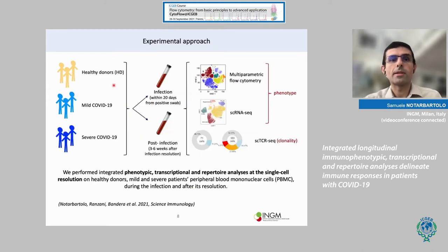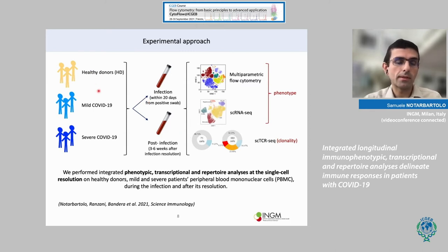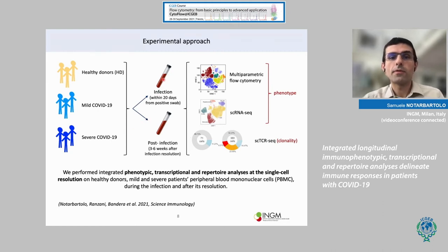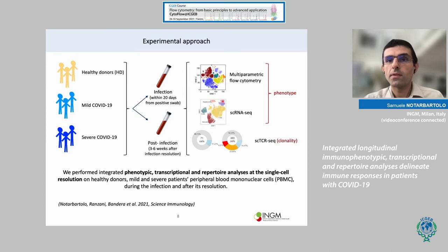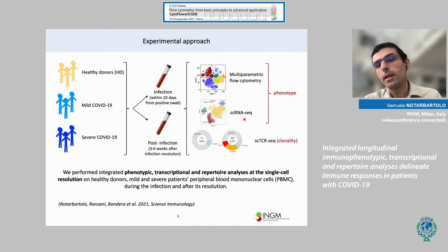This was our experimental approach: we took peripheral blood from healthy donors and patients with mild or severe COVID-19, both during the infection and some weeks after the infection was resolved. We performed extensive phenotyping by multiparametric flow cytometry and single-cell RNA sequencing, and we also looked at clonality by single-cell TCR sequencing.